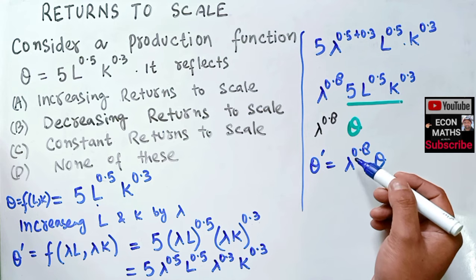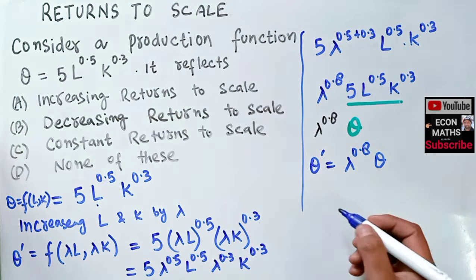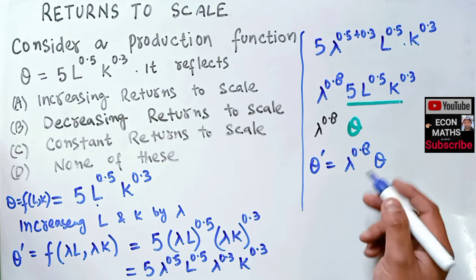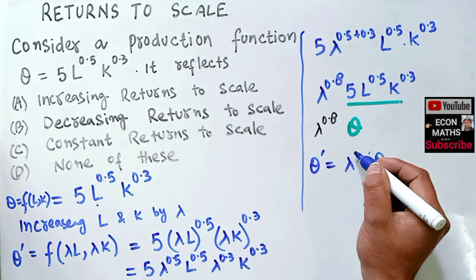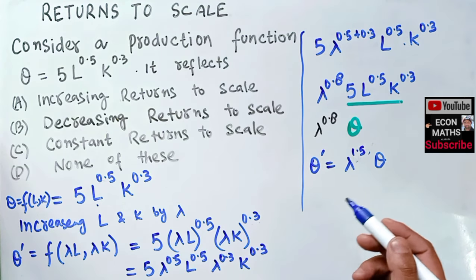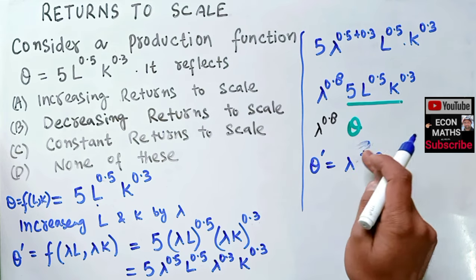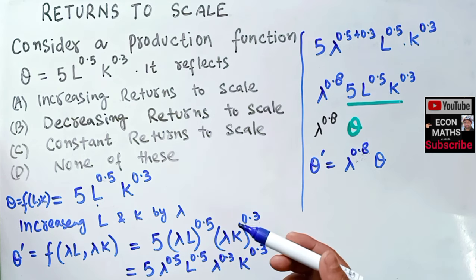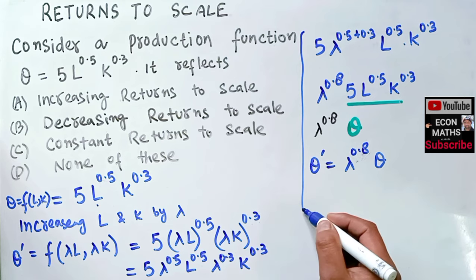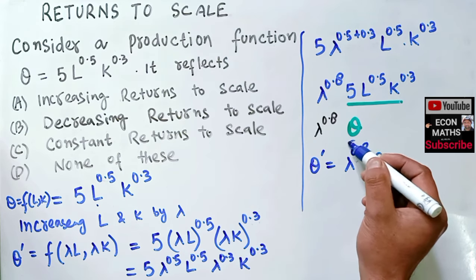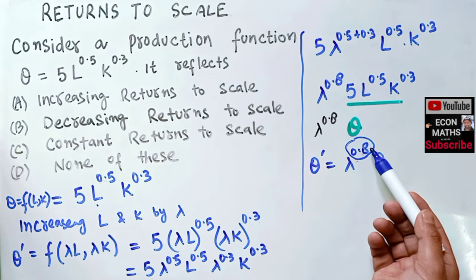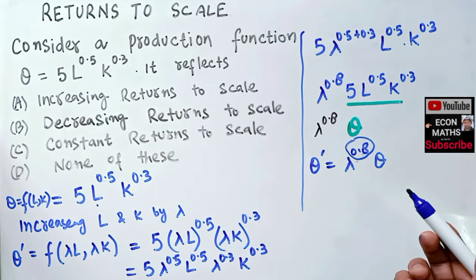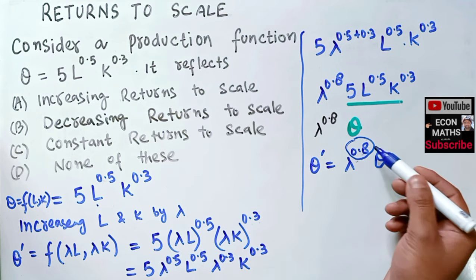Since we increased L and K by lambda but output increased by only lambda^0.8, this exhibits decreasing returns to scale. If instead the exponent were, say, 1.4, it would give increasing returns to scale. The rule is: if the exponent is greater than 1 we get increasing returns to scale, if it equals 1 we get constant returns to scale, and if it is less than 1 we get decreasing returns to scale.